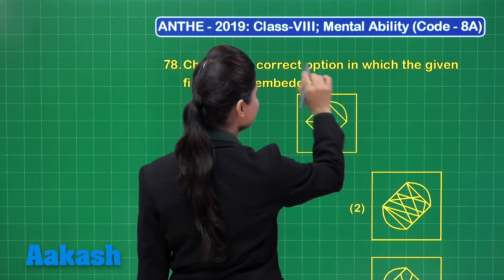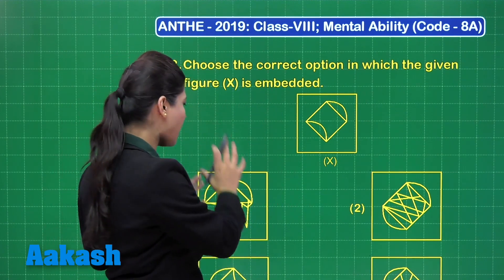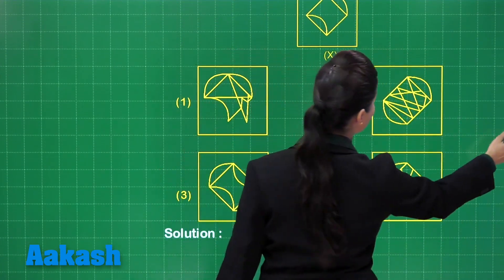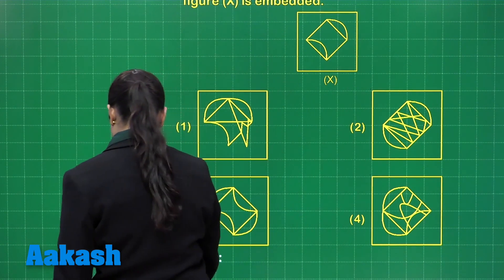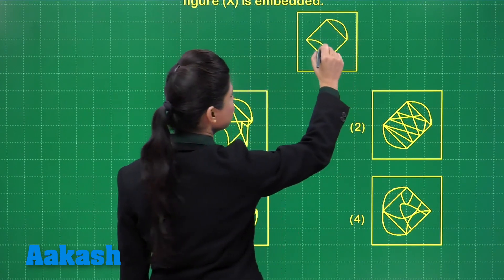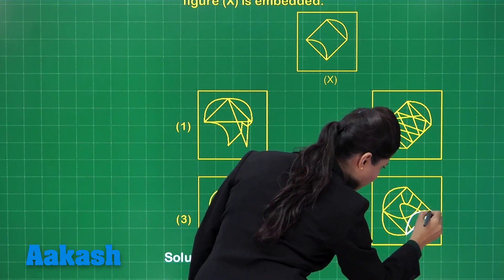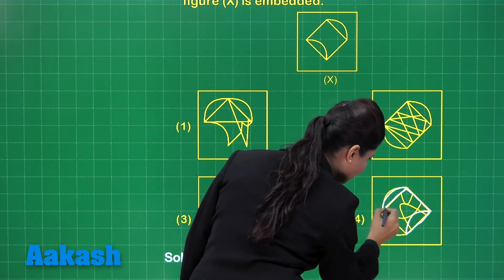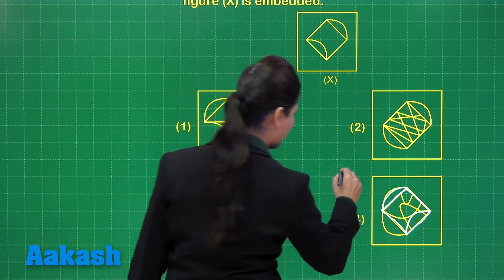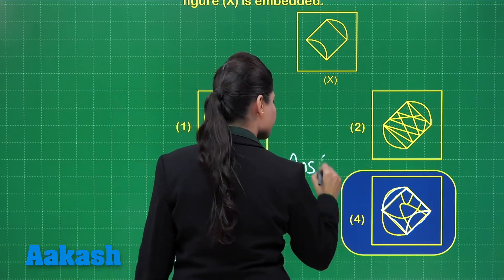Let's go back to the question — embedded means the figure should be part of one of these figures. Going by the options, you can clearly find that this figure can be redrawn in option number 4 by observation. You can see we have a square and two smaller arcs. This can clearly be embedded in that figure, so the correct answer for this question is option number 4.